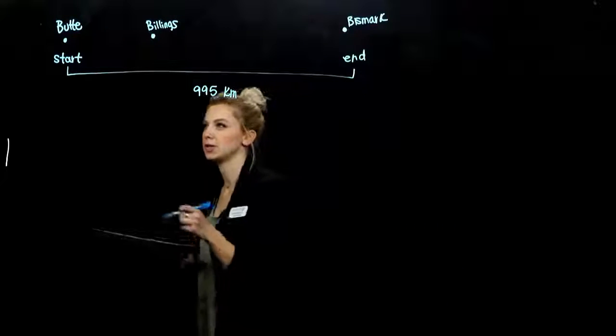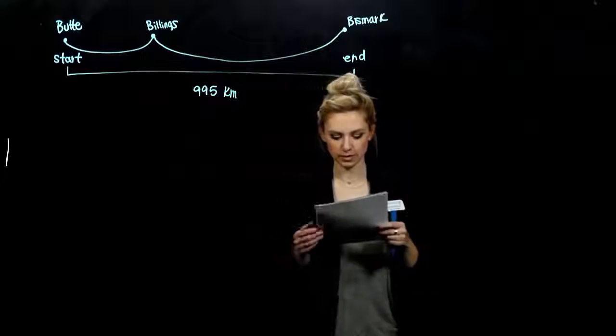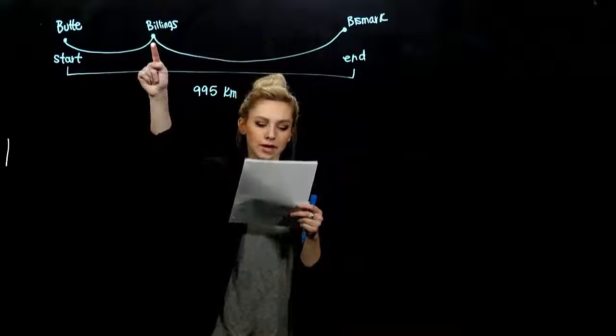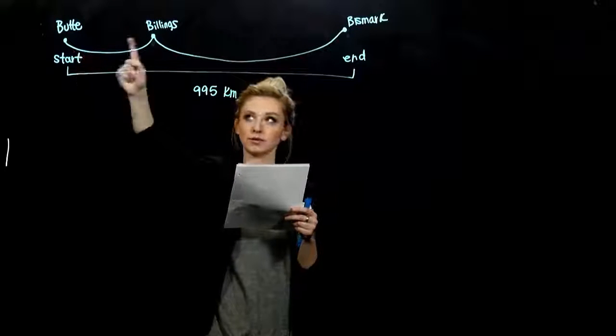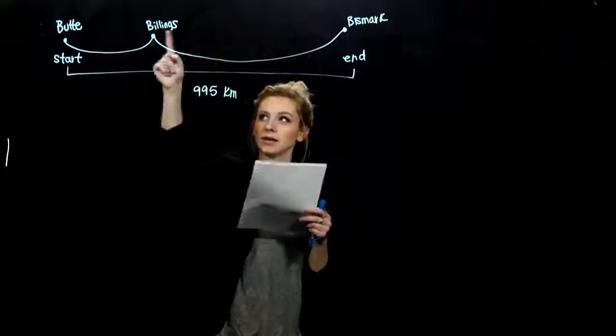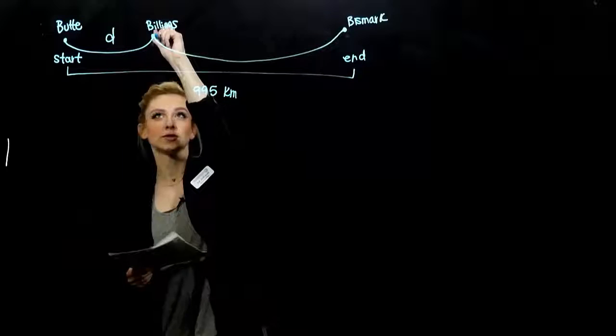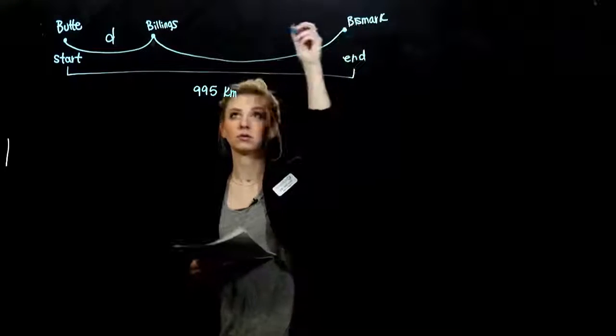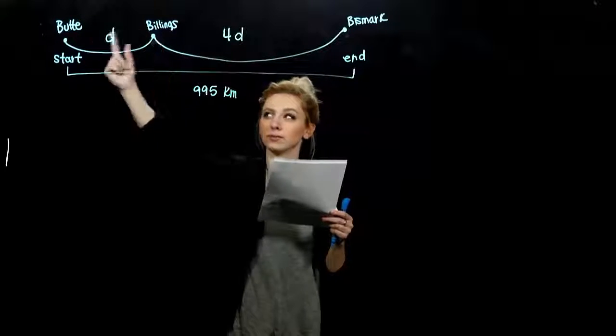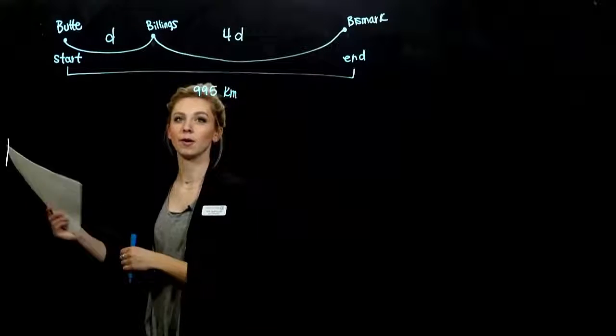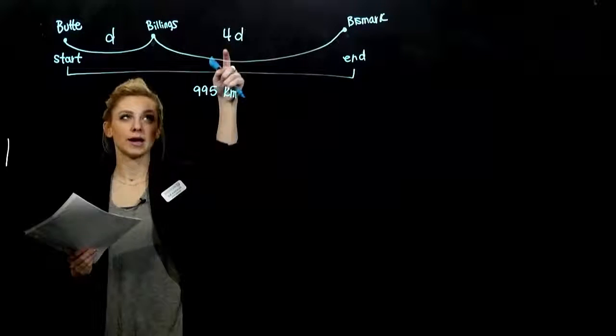We know a relationship between the distance between Butte and Billings and Billings and Bismarck. Let me just read that sentence again. At Billings, he was four times as far from Bismarck as he was from Butte. So when he was here, he was four times as far this way as he was this way. So if I let this unknown distance be d, the distance from Butte to Billings, then the distance from Billings to Bismarck is going to be four times d.